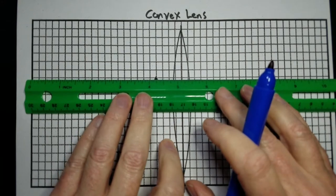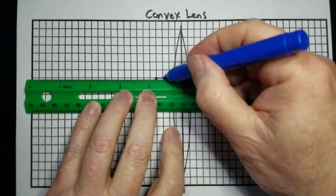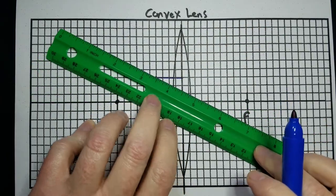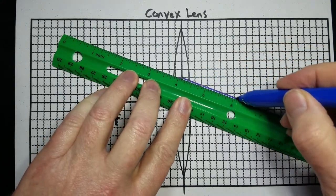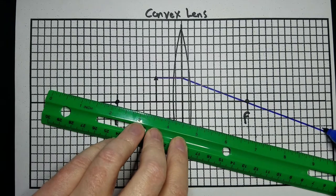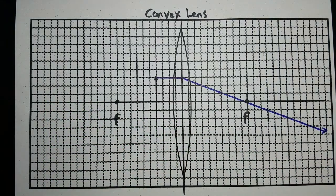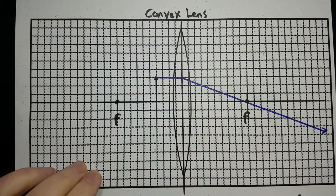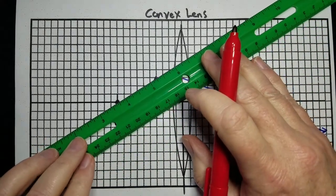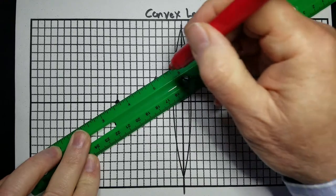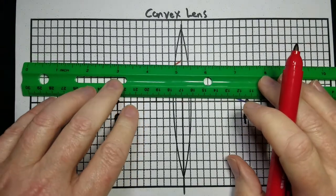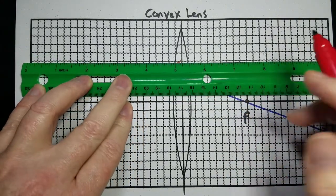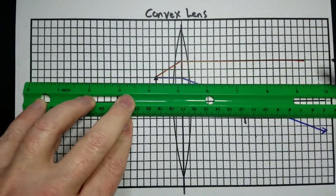Again, we start off at the top of our object and draw a line parallel to the principal axis. It hits the center of the lens, and it's going to refract towards the thicker part of the lens, which means it's going to refract down and go through here. We're going to draw one from the other focal point. Since the object is inside the focal point, what you have to do is line up the focal point to the top of your object, then draw a line from the top of the object until it hits the center part of that lens, and then it's going to refract parallel to the principal axis and go off in that direction.